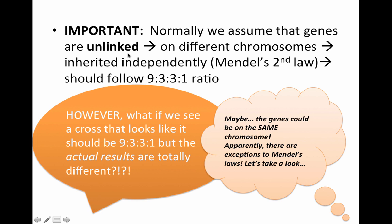Normally, we assume that the genes are unlinked: different chromosomes, inherited independently, follow Mendel's second law, get the predicted ratio. Now we can flip this around. If the genes are linked, then they are on the same chromosome, not inherited independently. Therefore, they do not follow Mendel's second law, and we will not find a 9 to 3 to 3 to 1 ratio. So if you get a question presenting data that does not match the Punnett square you generated, and they ask for an explanation, you would say: because it doesn't follow the ratio, we assume the genes must be linked and on the same chromosome, not inherited independently. The only way for recombinants to form is through crossing over, but there is no way to predict how likely that is to happen.